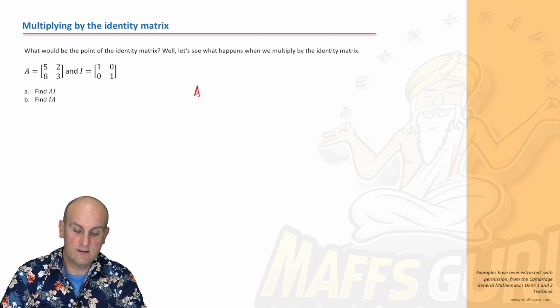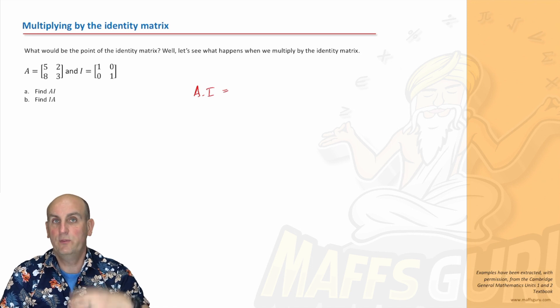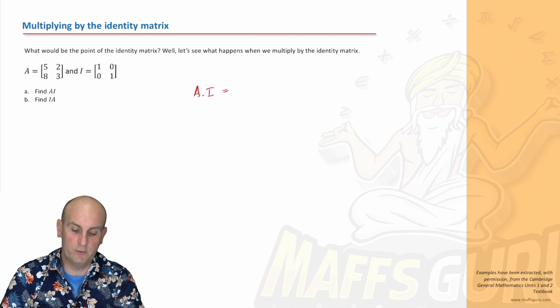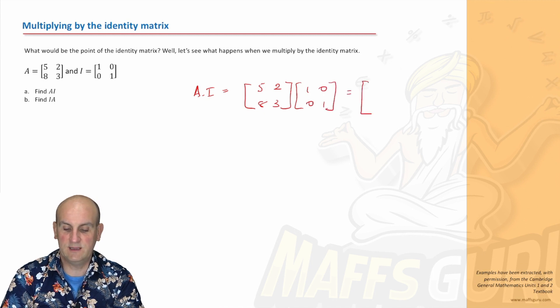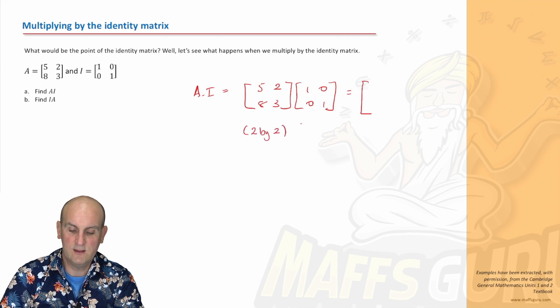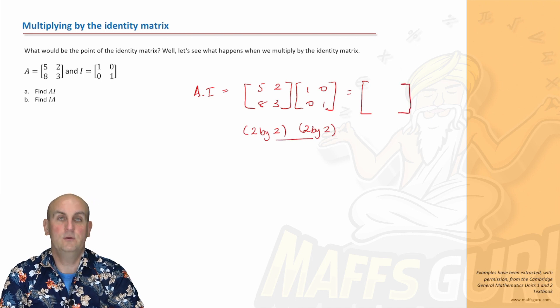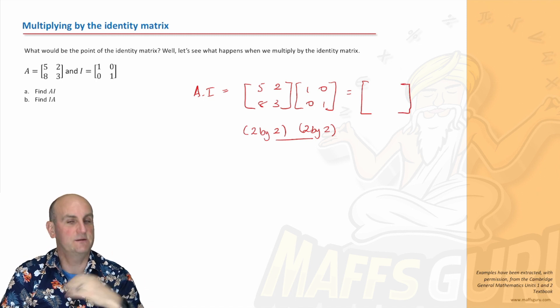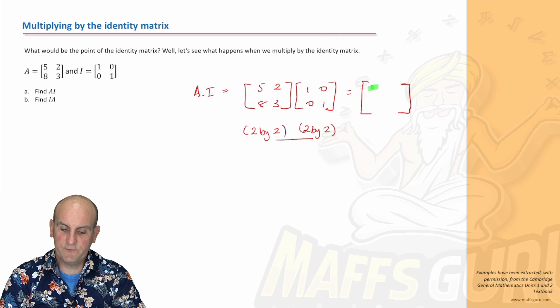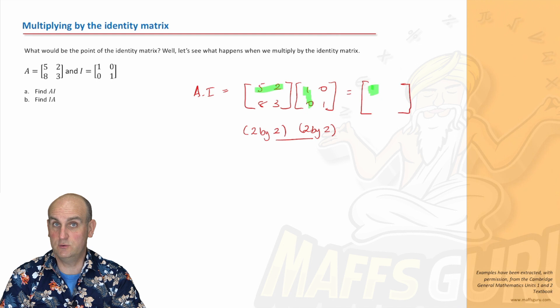We've got A as 5283 and I as 1001. Let's work out what A times I is. Now, we can multiply these together. The order of those letters is really important, which means we must put matrix A first, 5283. Then the identity matrix, which is 1001. And ka-ching, let's multiply them together. Now, can we? Yes, because that's a two by two. This is a two by two, which means they're the same. And it gives me a two by two as my answer. All right. So far, so good. If you don't know how to multiply matrices, there is a video. Go and watch it. First thing first, we're going to find this value here. So we're going to do this row times this column. Again, if you're not sure why, previous video.